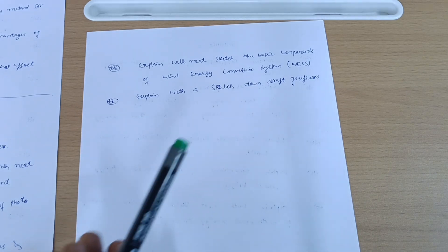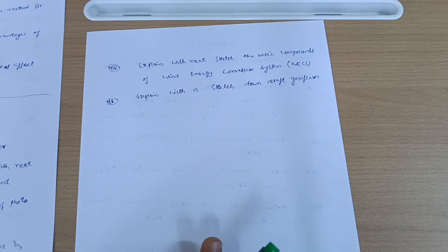Explain with a sketch downdraft gasifier. These are the three passing modules, so go through these concepts whatever I have discussed.